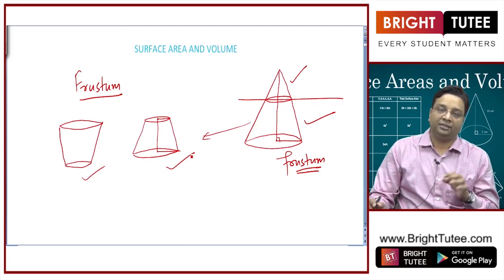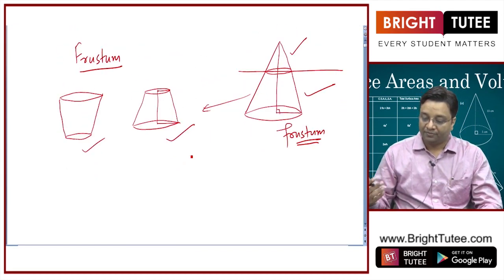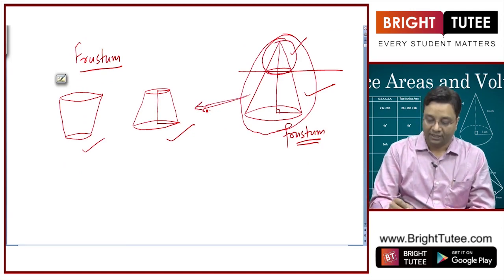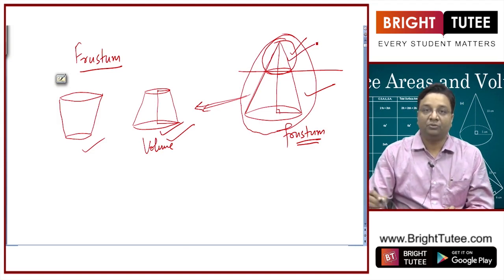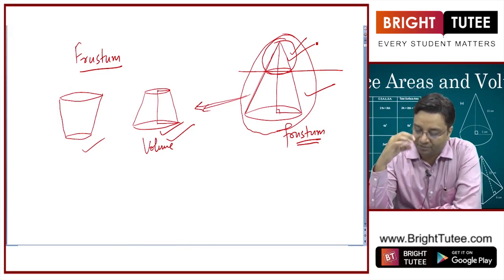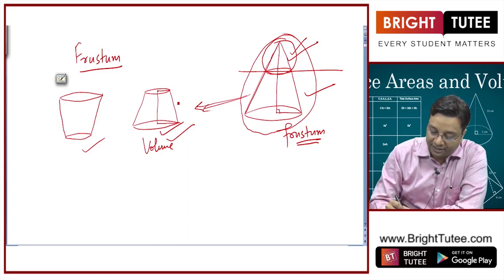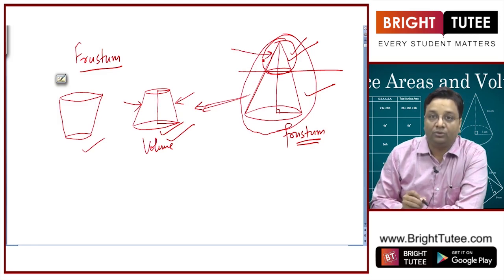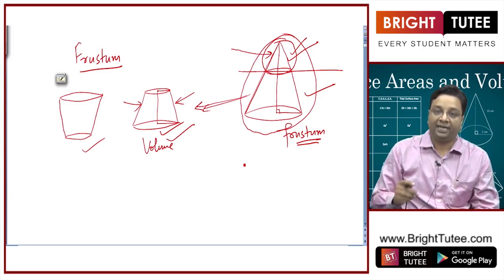So now, if you need to calculate the volume, surface areas, or curved surface areas of the frustum of a cone, what you will have to do is: this is a bigger cone, and if I remove the smaller cone from it, I get this shape. The volume of this shape will be the volume of the bigger cone minus the volume of the smaller cone. Similarly, to find the curved surface area of the frustum, you will subtract the curved surface area of the smaller cone from the bigger cone. This is how you will derive the formulae for volumes and surface areas of a frustum of a cone.